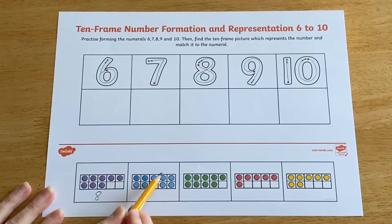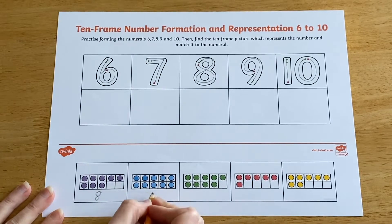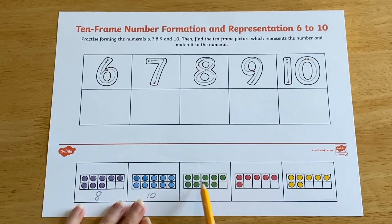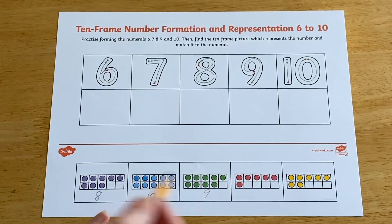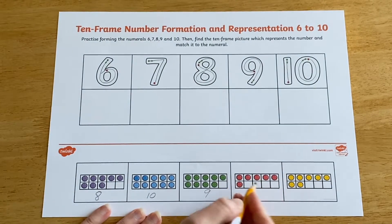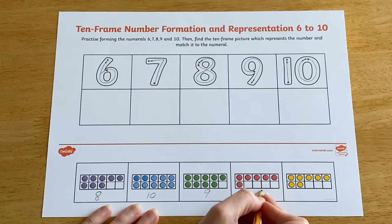Can children use their knowledge of 10 frames to discover how many counters are in the 10 frame without counting? For example, this one has one less than 10, or in this one the top row is full and we have one more so it must be six.